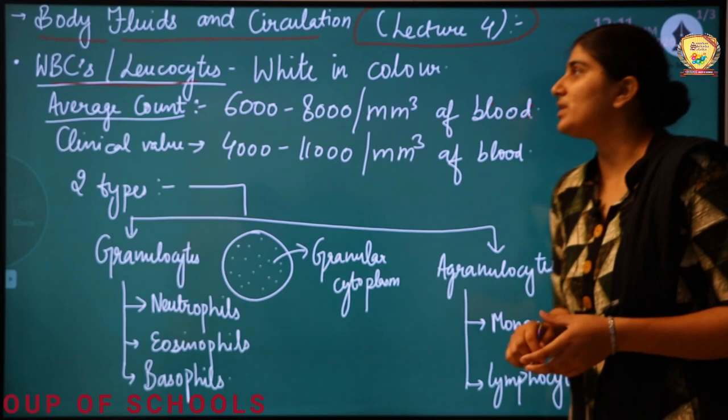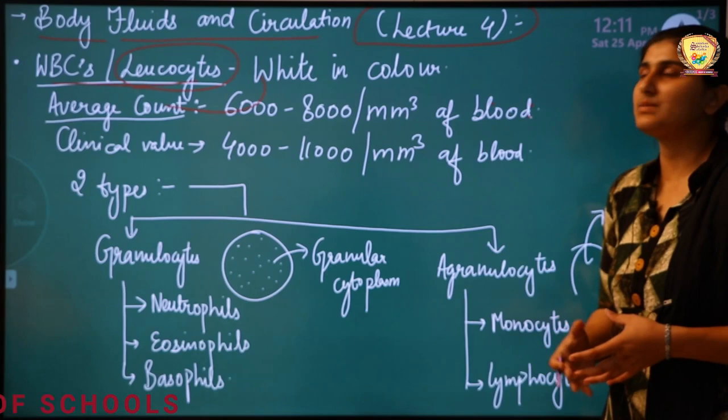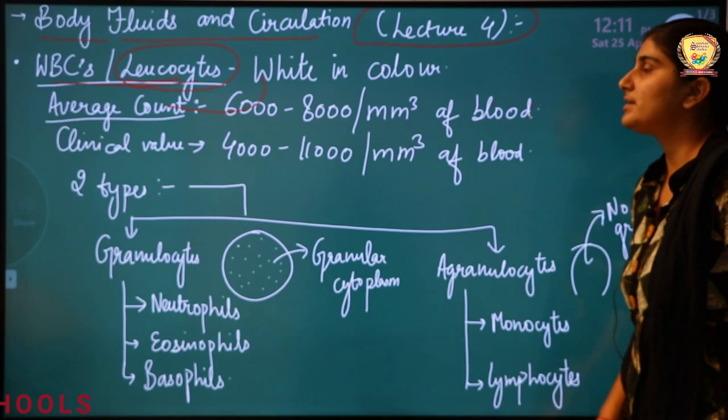Starting with WBCs. WBCs are white blood cells. They are also known as leukocytes. The word 'leuco' is related to white — leuco means white. So these are white-colored cells.